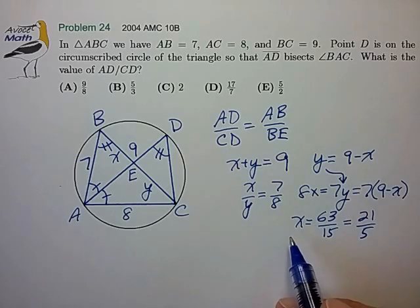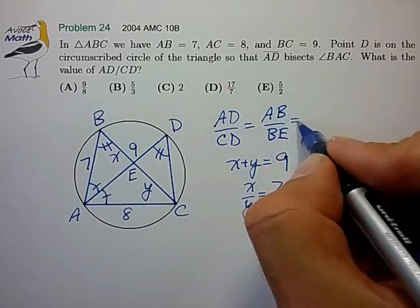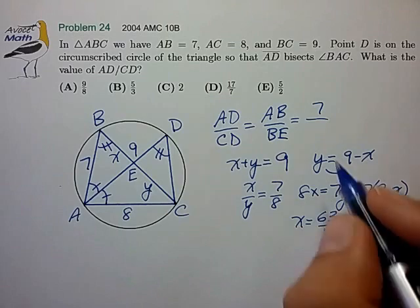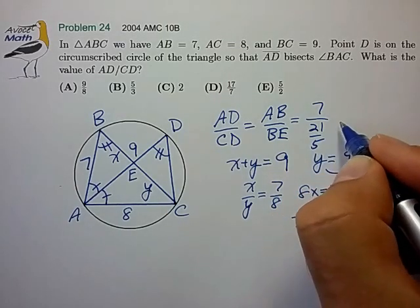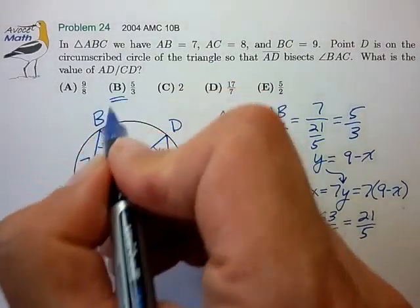So, now we can pretty quickly figure out this ratio. Because we have AB of side length 7, we have BE of 21 over 5. So, that works out to 5 thirds. And that's choice B.